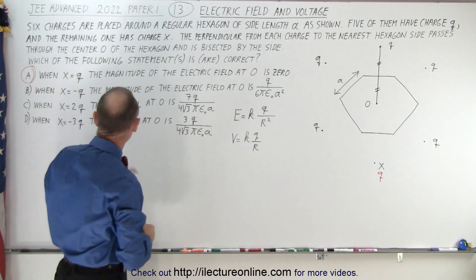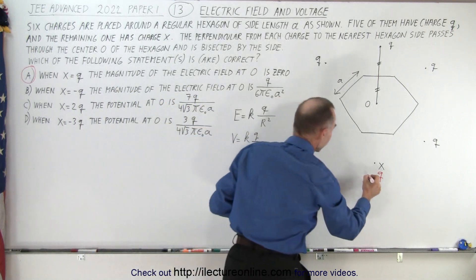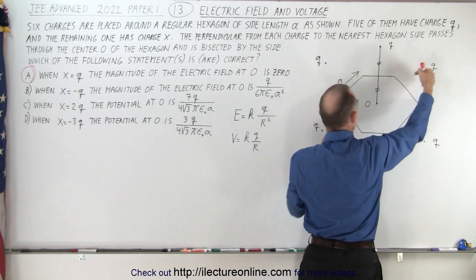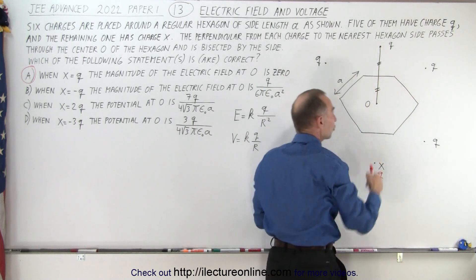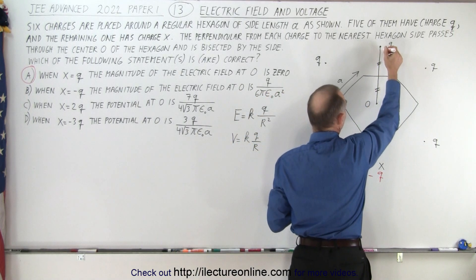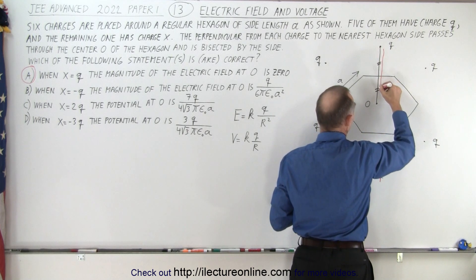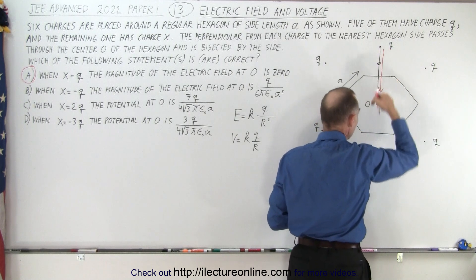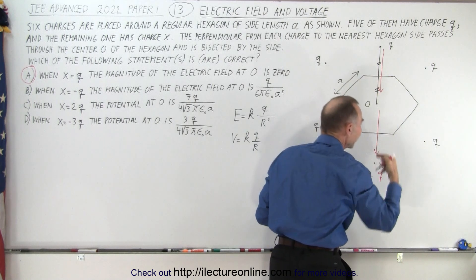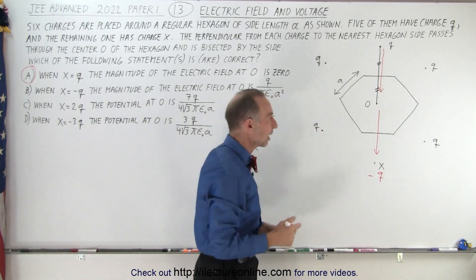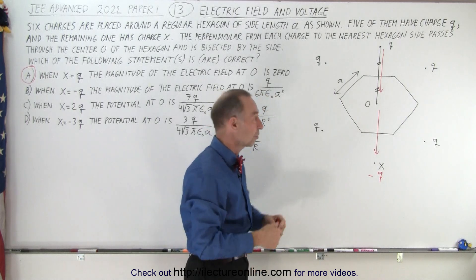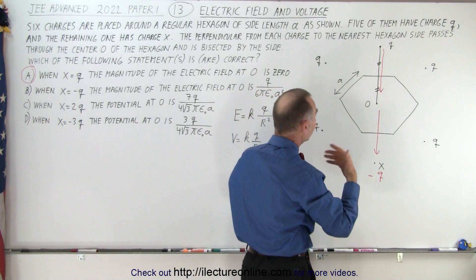What happens when X becomes negative Q? We still have this pair which will cancel out, and this pair which will cancel out, but now these two charges will cause an electric field in the same direction. For a positive charge the electric field is away from the charge, and for the negative charge the electric field is towards it — so they both point in the same direction and are additive. So we need to find the electric field caused by one of the charges and then double it.